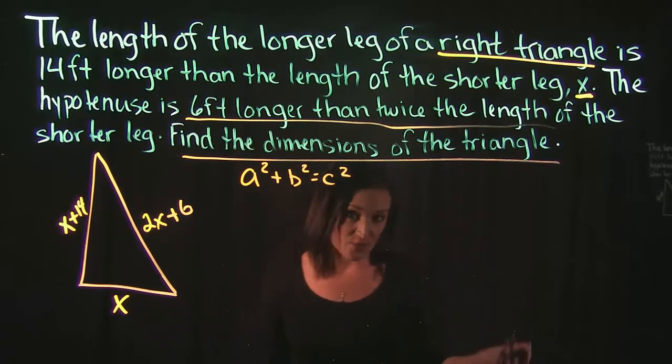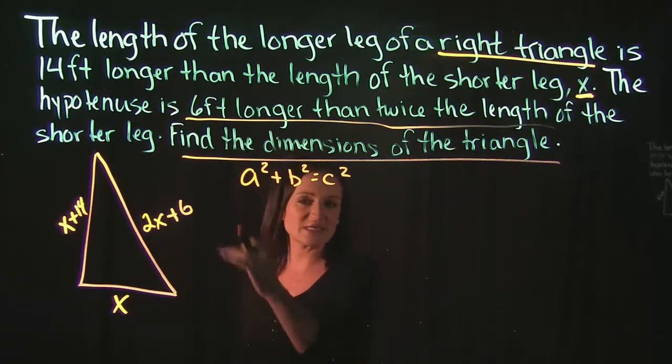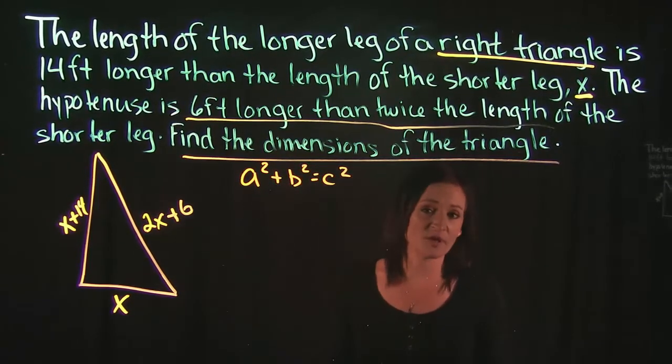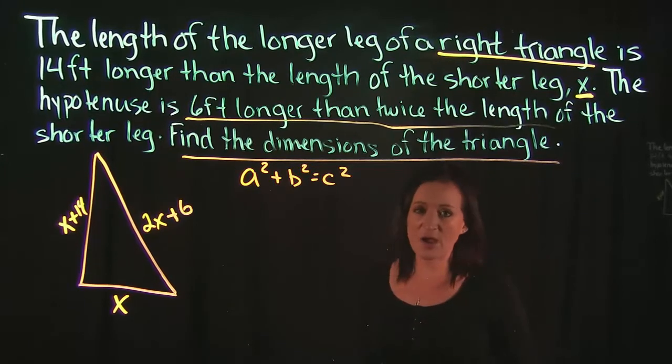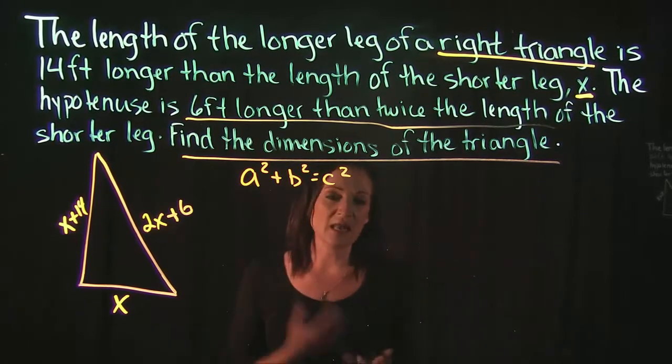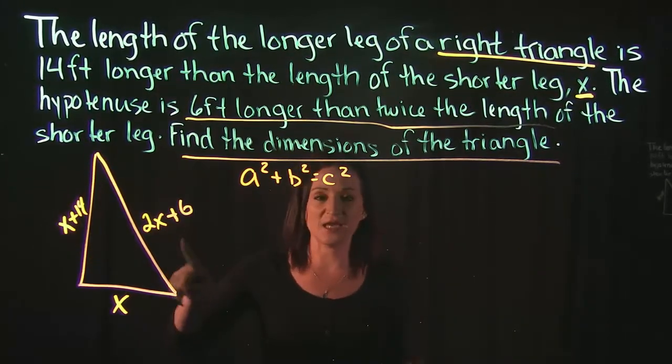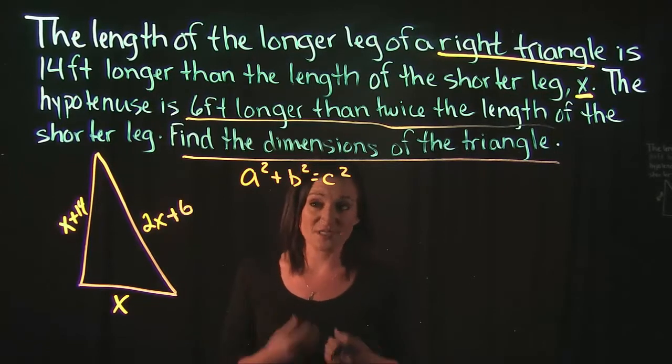So we know all three sides essentially of our triangle. So we're going to take our three sides, we're going to plug it into this formula, solve, figure out what x is, and that's going to allow us to plug back in here and figure out the individual sides.